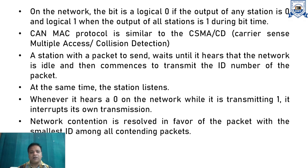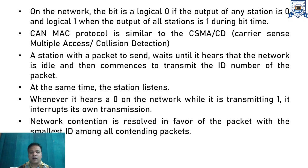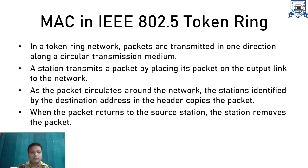A station with a packet to send waits until it hears that the network is idle, then it begins to transmit the ID number of the packet. At the same time, the station also listens. Whenever it hears a 0 on the network while transmitting a 1, it interrupts its own transmission. Network contention is resolved in favor of the packet with the smallest ID among all contending packets.